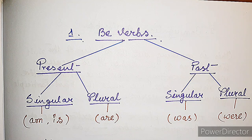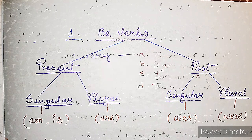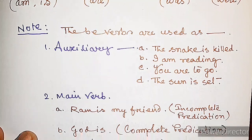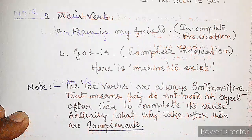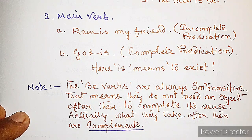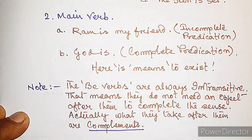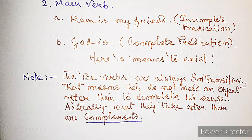Now let's start with the be verbs. In English the total be verbs are five. In present tense, in singular there are two: 'am' and 'is', and in plural there is one: 'are'. In past tense there are two: in singular 'was' and in plural 'were'. The be verbs are used as auxiliary — 'The snake is killed', 'I am reading', 'You were to go', 'The sun is set'. They are also used as main verbs: 'Ram is my friend', 'God is here.'